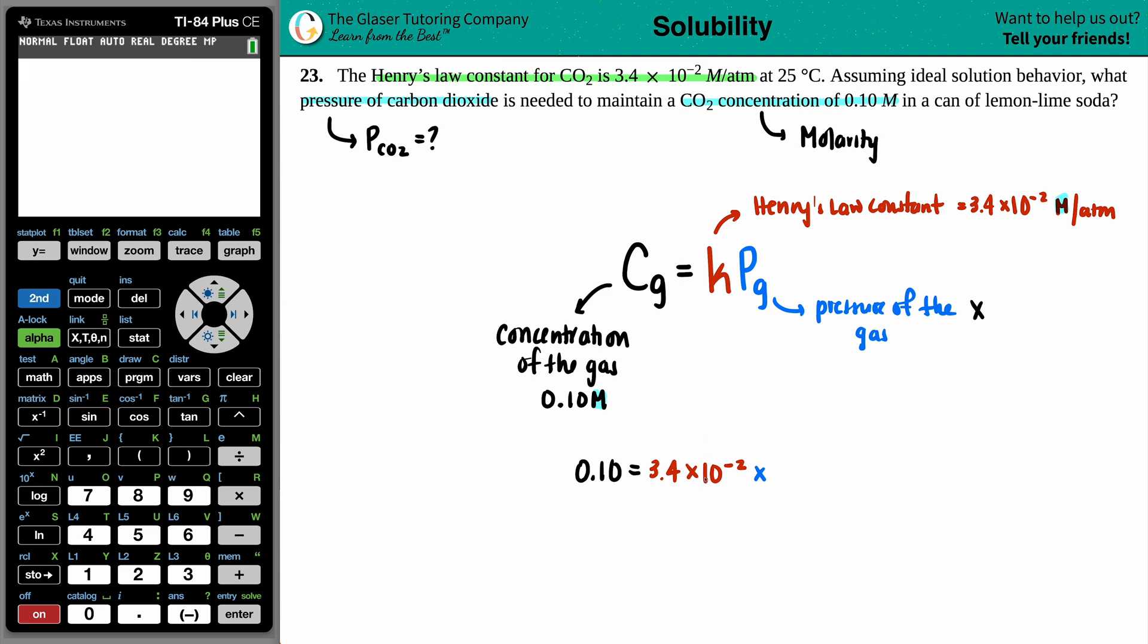And now just solve. We want to solve for X. So this is over 3.4 times 10 to the negative second.